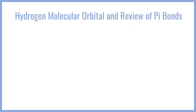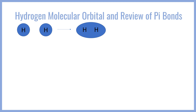To refresh our memory on the basics of molecular orbitals, let's look at how orbitals can combine to form sigma bonds. If we have two hydrogen 1s orbitals, those can combine in one of two ways. If the wave functions are the same sign, the orbitals will constructively interfere to give a bonding orbital, where the electron density is shared between the nuclei.